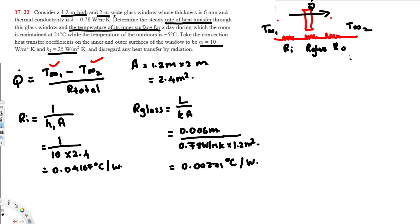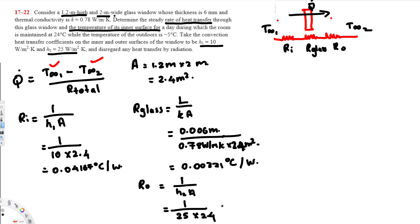Now for R_outside — this is again convection, so we use 1/(h₂·A). The outside convection coefficient h₂ = 25 W/m²K and area = 2.4 m². So R_outside = 1 / (25 × 2.4) = 0.01667 °C/W.